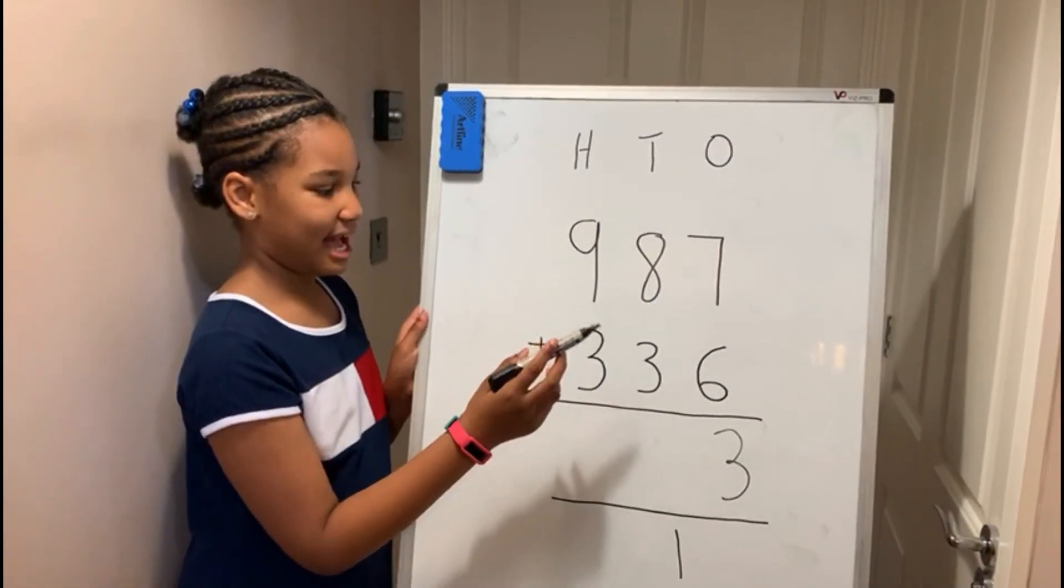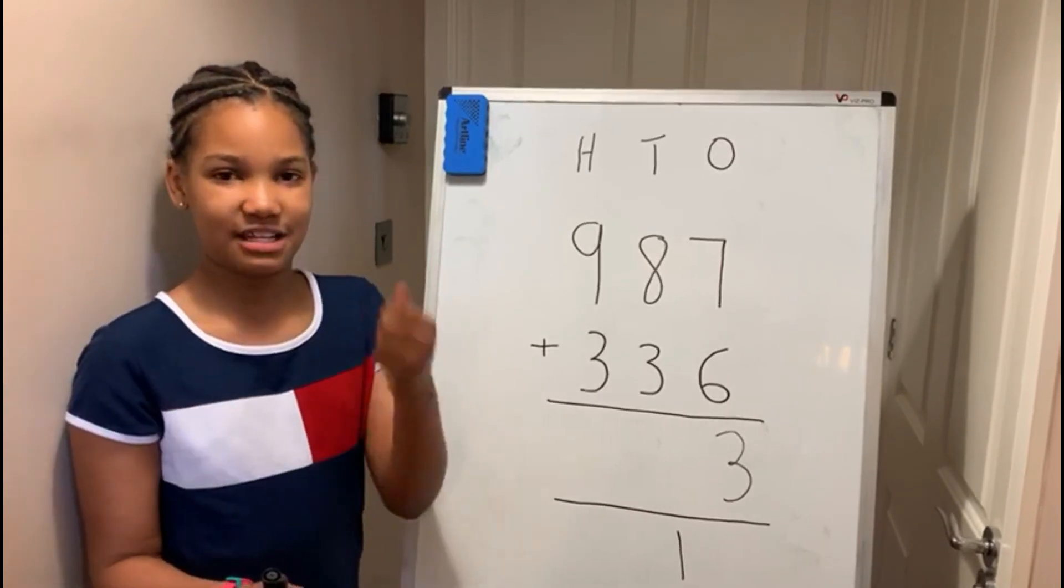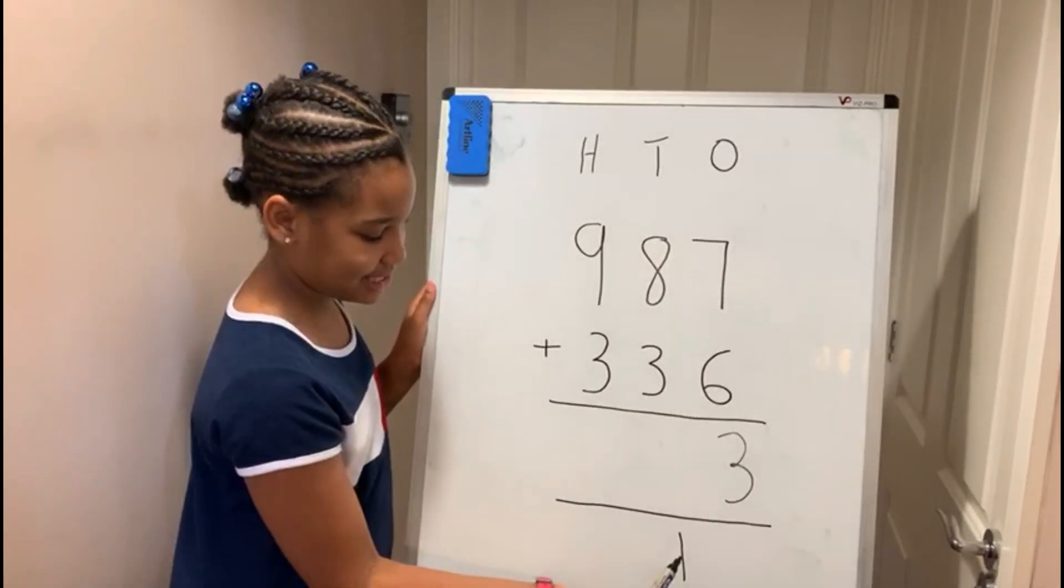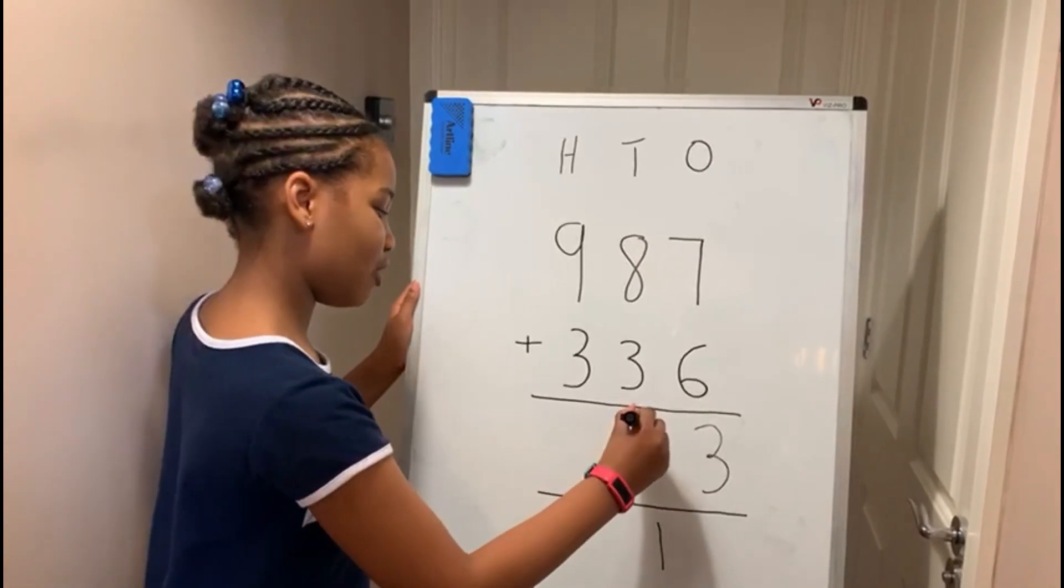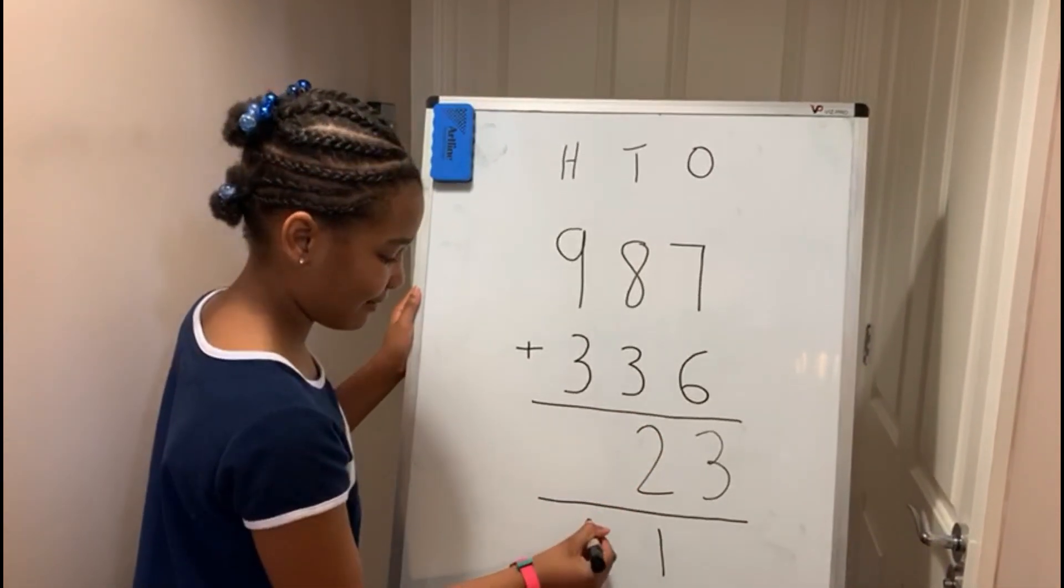Now you do eight add three: eight, nine, ten, eleven. But you still need to add this one, so it's twelve. But you still have to carry over a one.